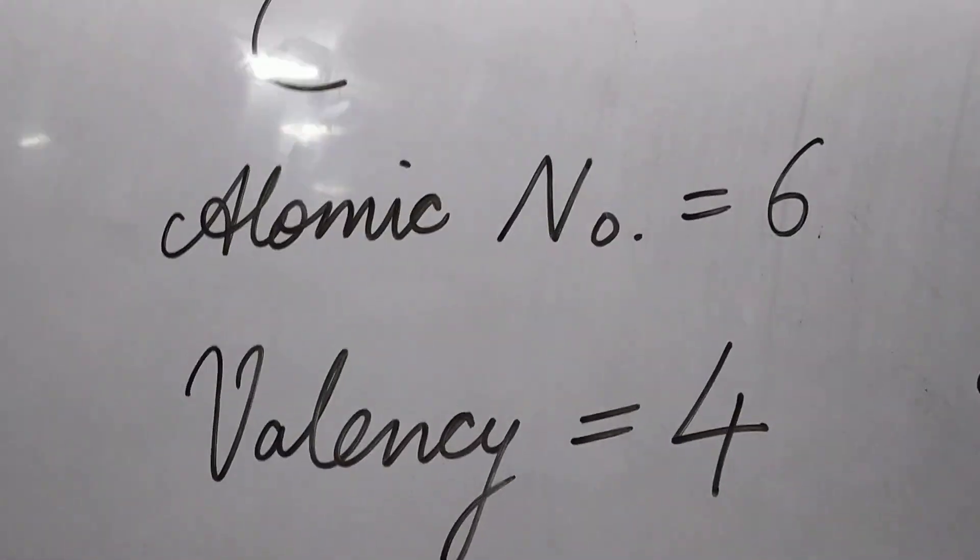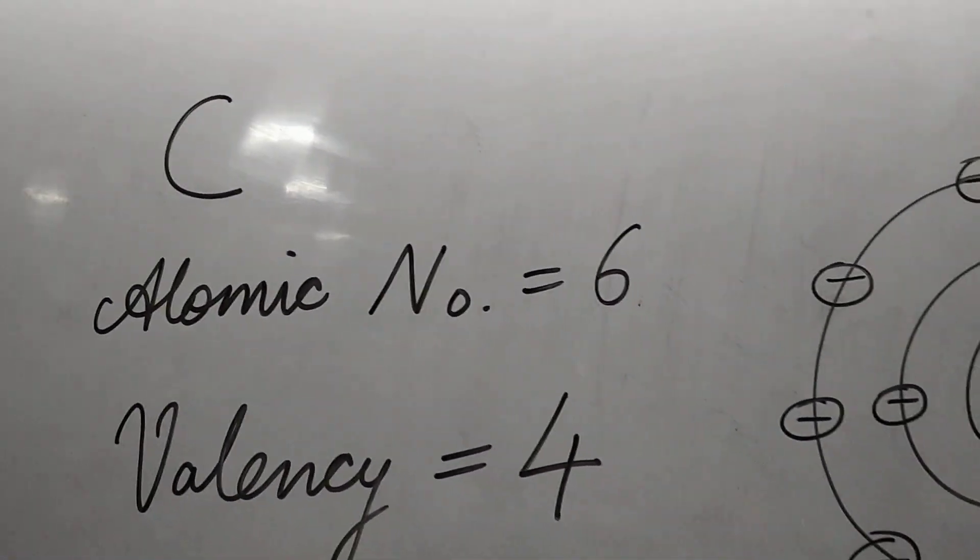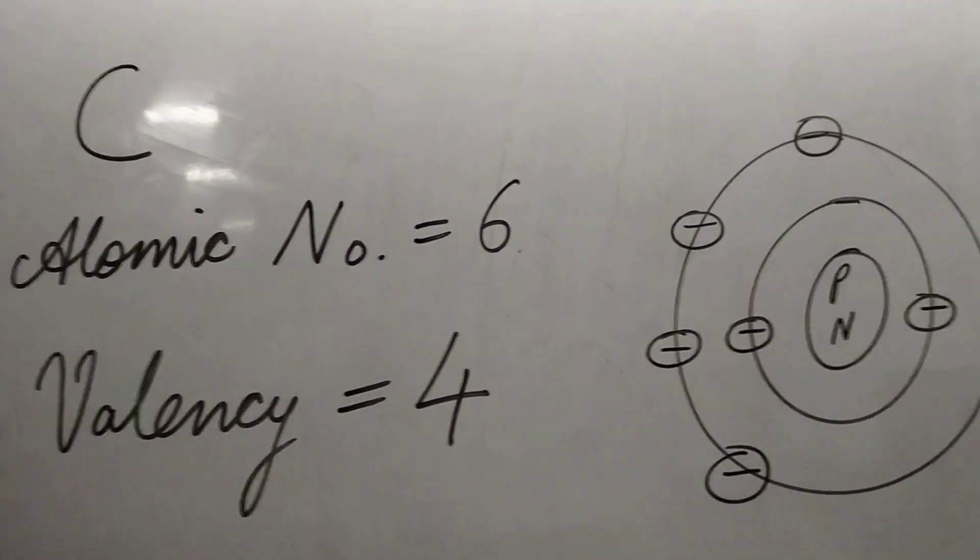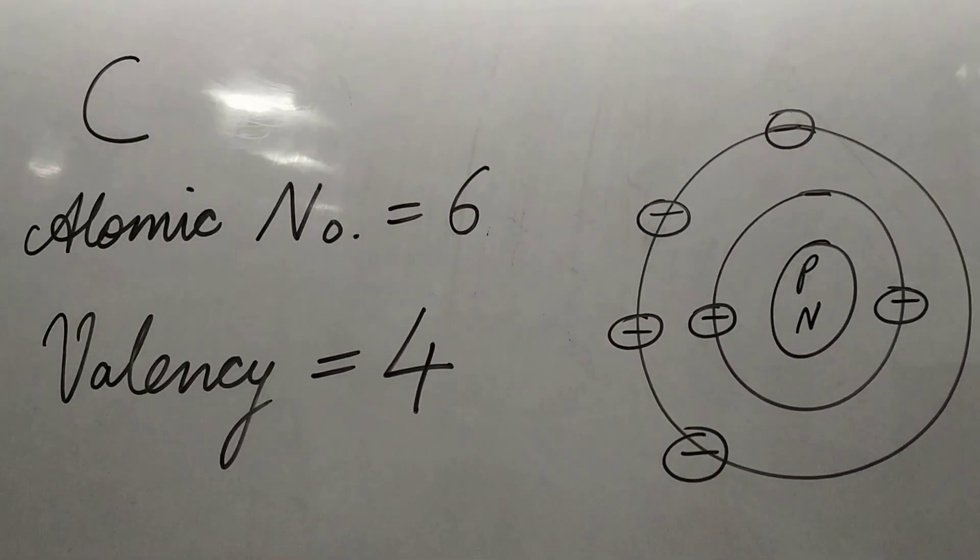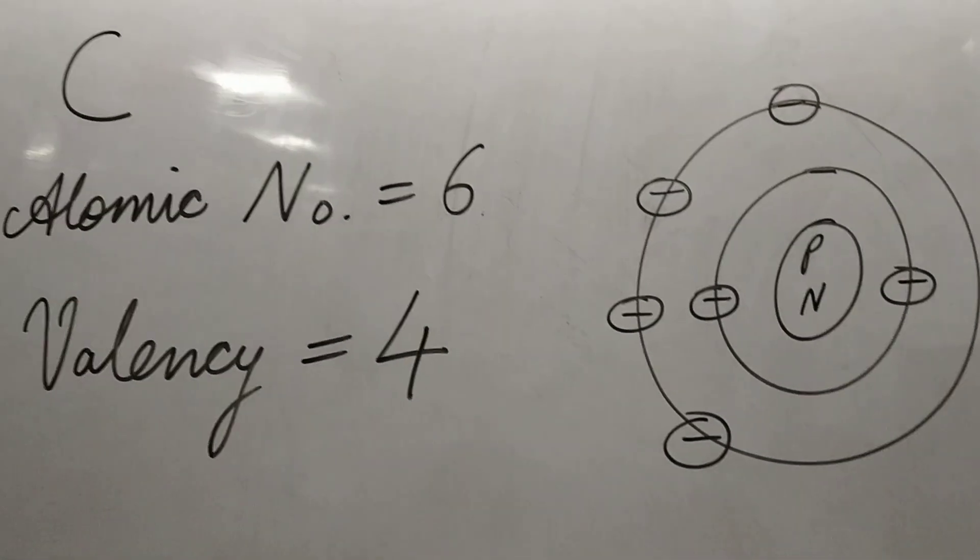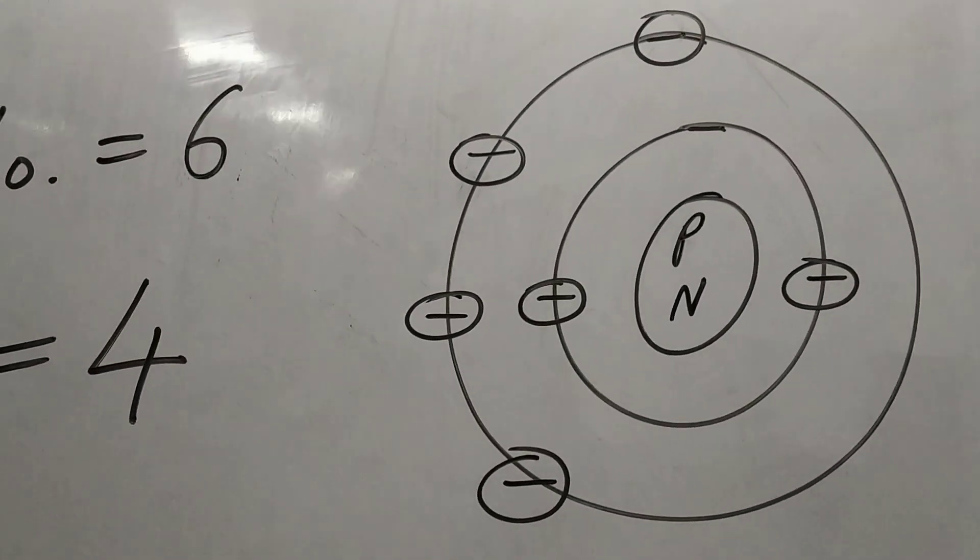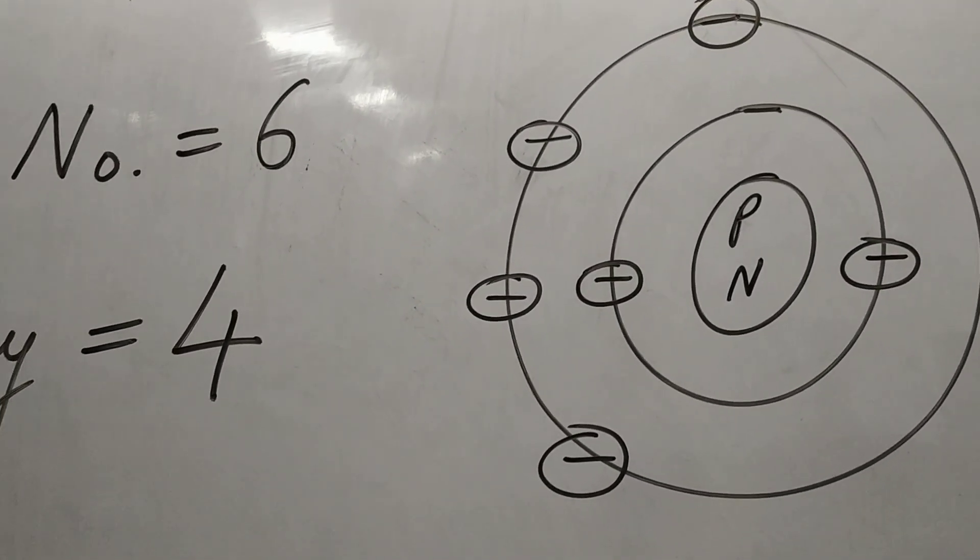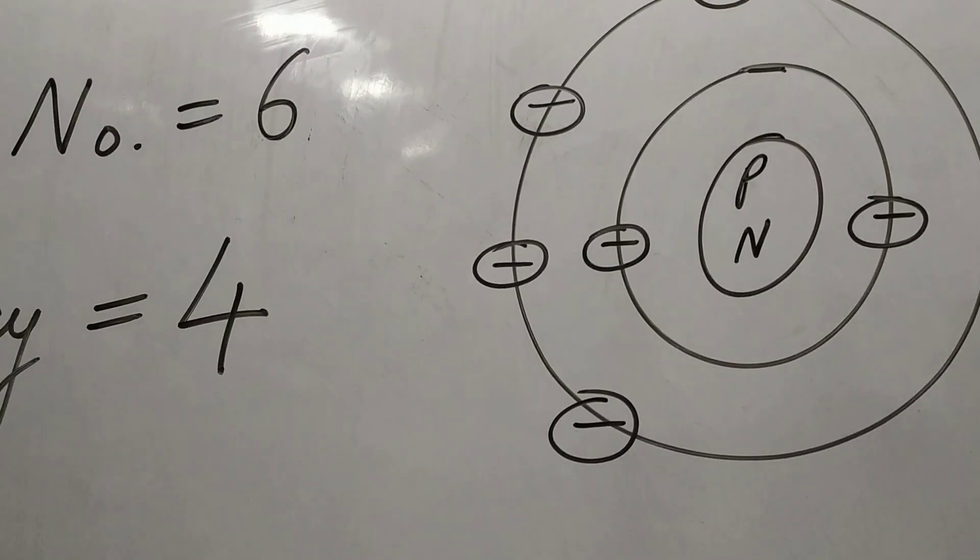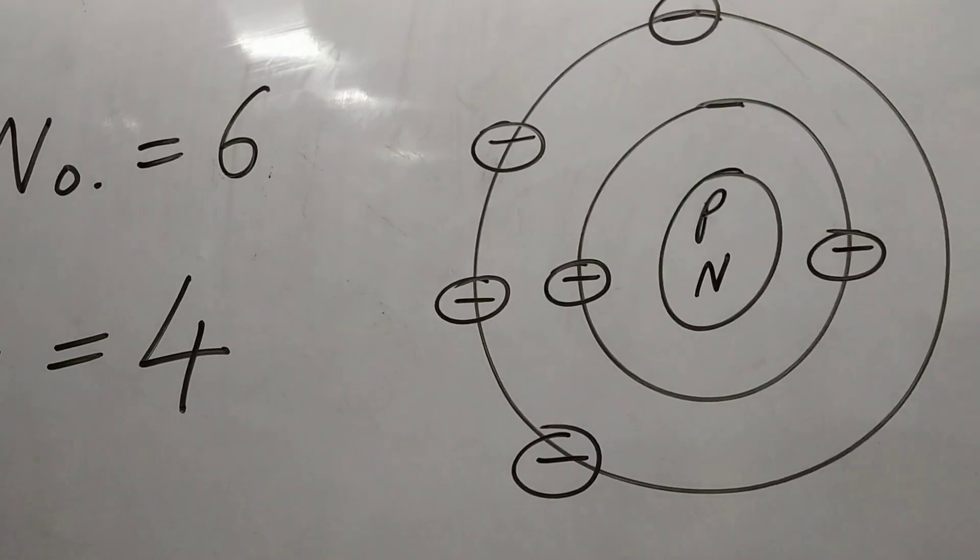Now, a case where sharing takes place. A very good example is the carbon family where you have carbon, silicon and all the other elements. What happens here, atomic number is six. There are four electrons in the outermost orbit. So the carbon family would usually share electrons.